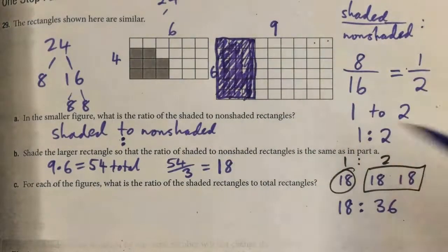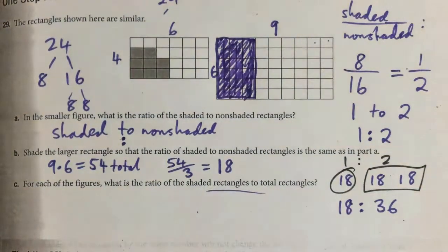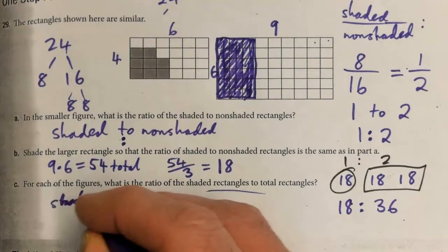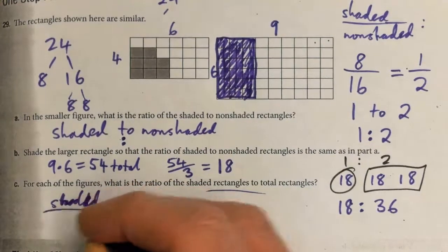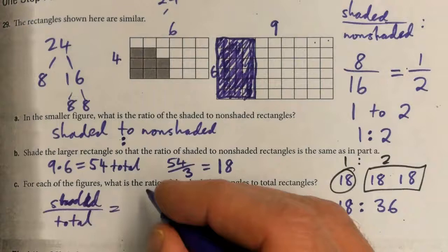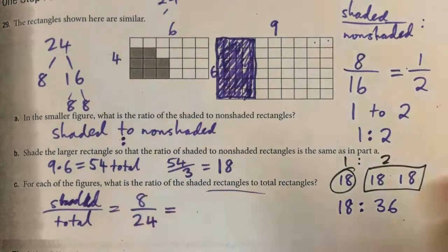Part c: for each of the figures, what is the ratio of the shaded rectangles to the total rectangles? I'm going to do both. Shaded over total. In the first one we had 8 shaded out of a total of 24.